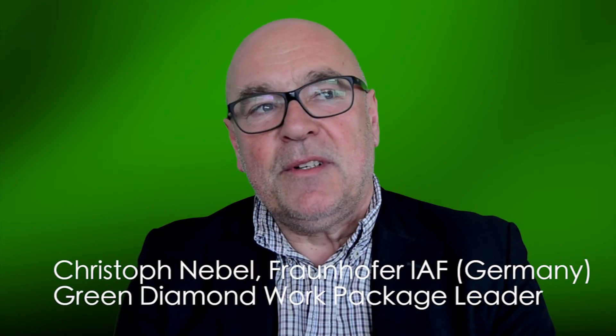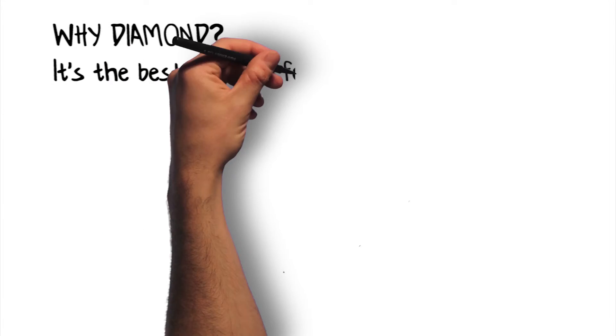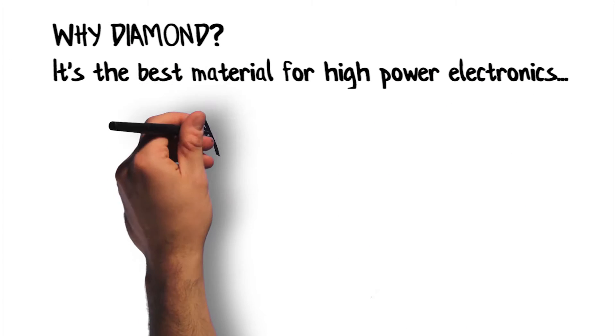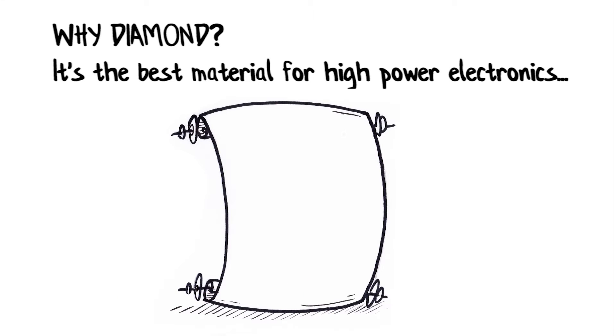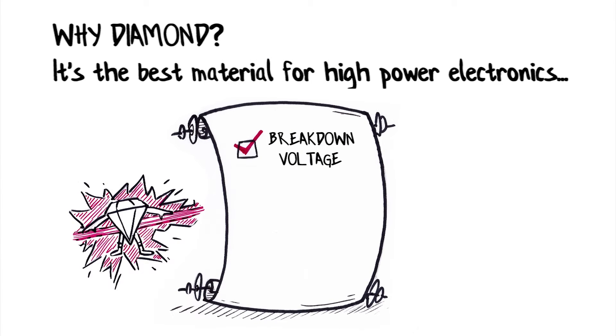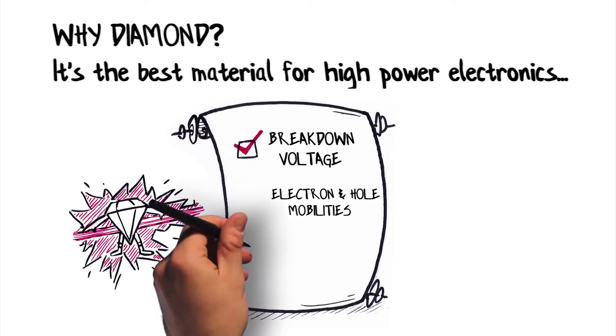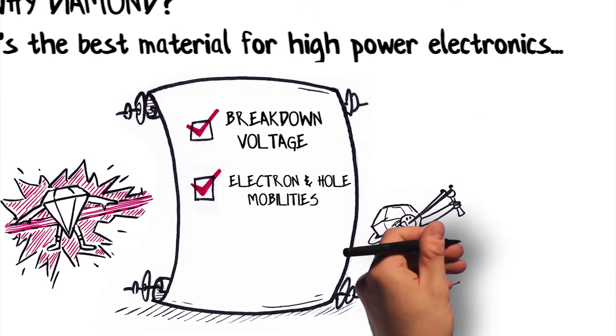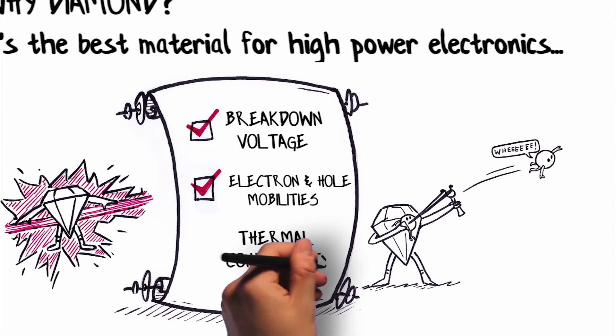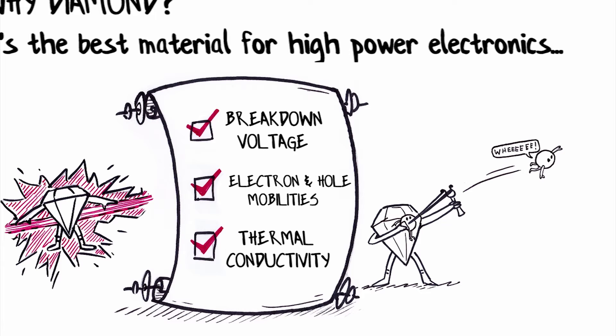Why diamond? That's interesting because diamond is theoretically the best material for high-power electronics. That's due to the fact that the breakdown voltage is highest, the mobilities of electrons and holes are very high, and the thermal conductivity of diamond is high. So the overall properties of diamond are so good that if you can work with a semiconductor, you would definitely choose diamond.